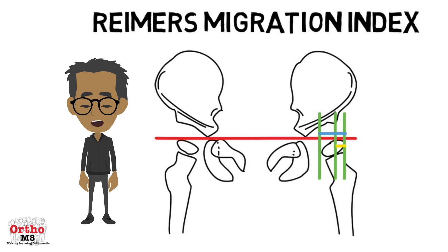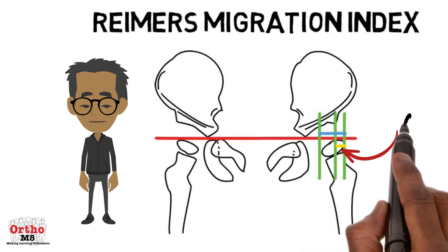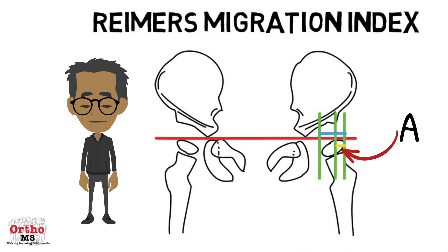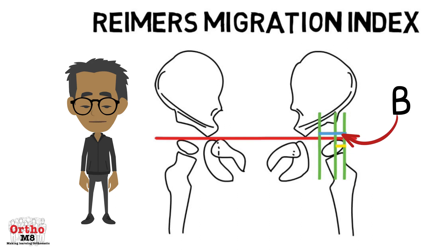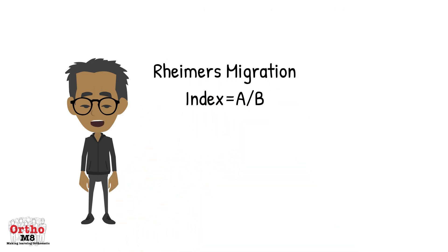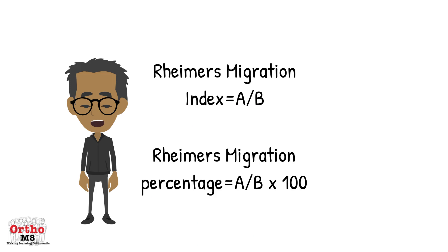The Rhymer Migration Index is the measurement of the yellow line over the blue line. Rhymer's Migration Index is equal to A over B, and the Rhymer's Migration Percentage is equal to the Migration Index times 100.